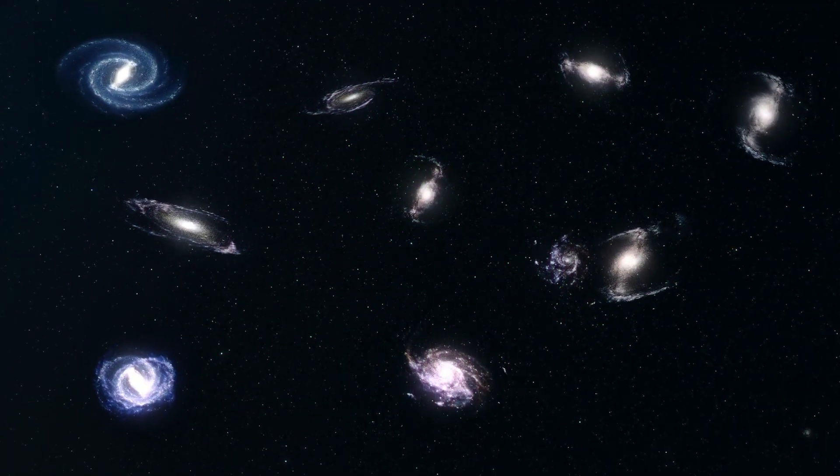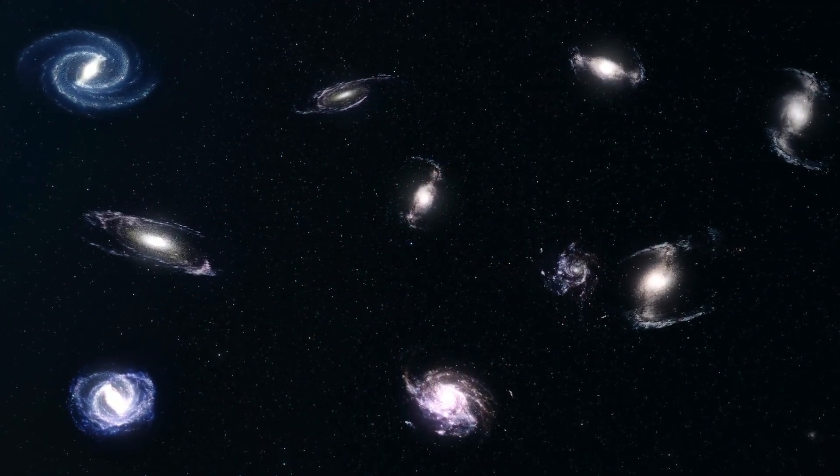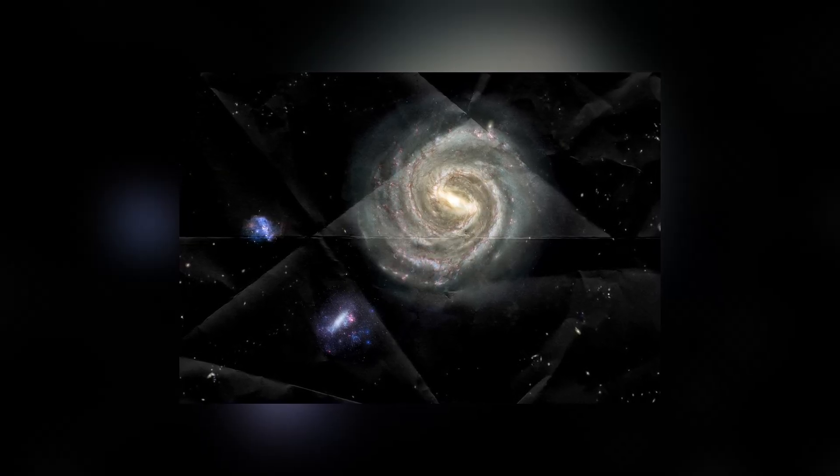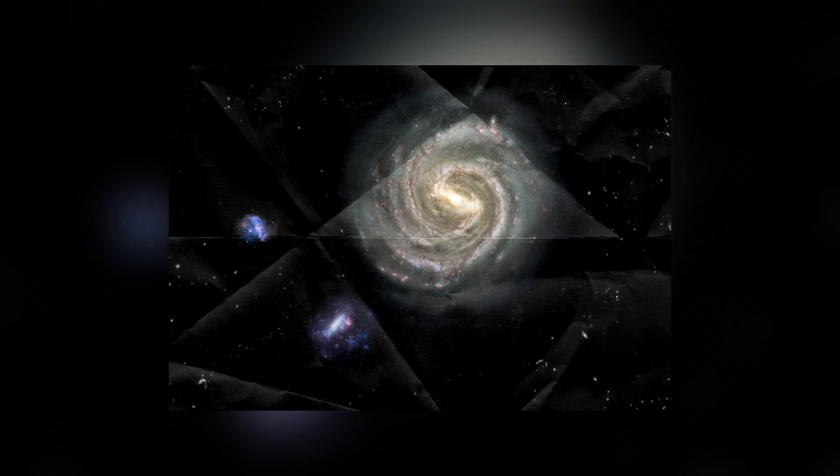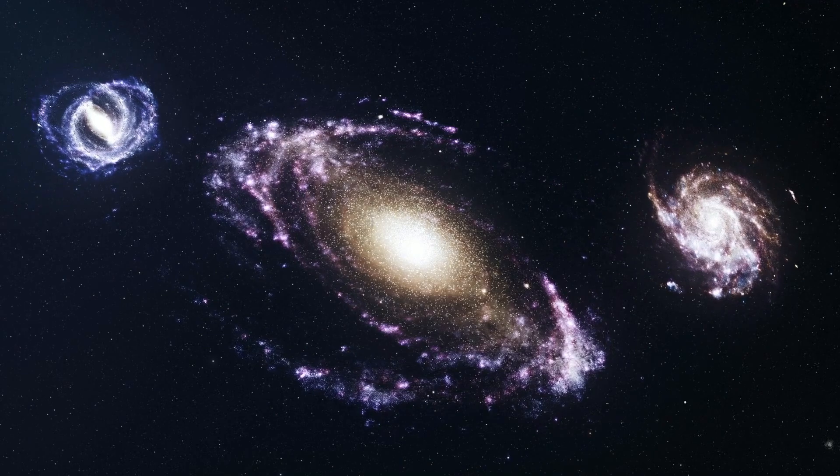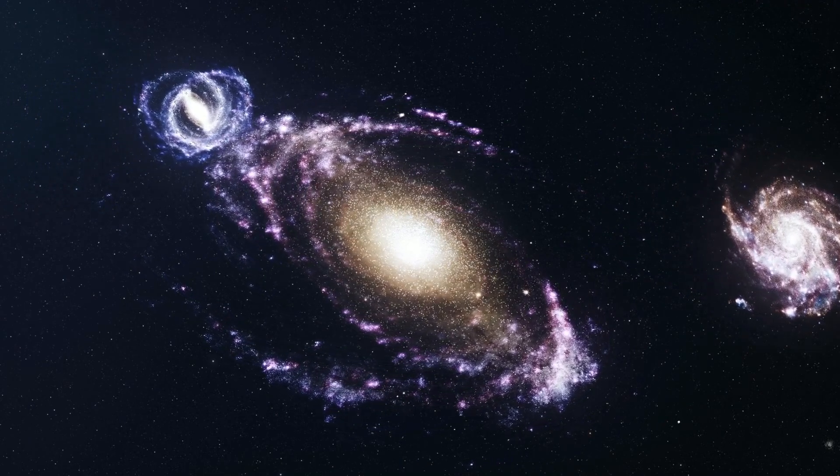The group to which our Milky Way belongs includes 40 galaxies. In the space between galaxies, one can also observe a vast number of dwarf galaxies, typically satellites of more massive objects like our galaxy or Andromeda.